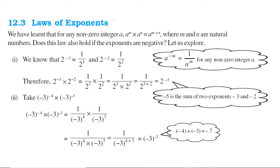What we have learnt up till now is: a to the power m into a to the power n — when the bases are same, the powers will add up, where m and n are actual numbers. So does this law hold for exponents that are negative also? Let us see.